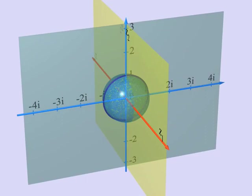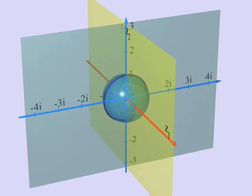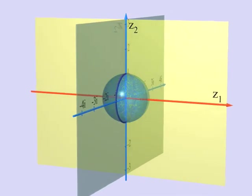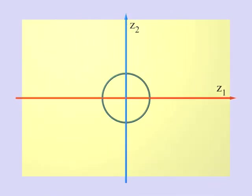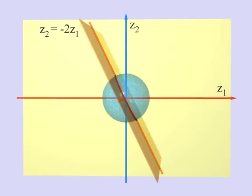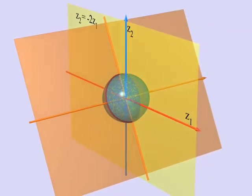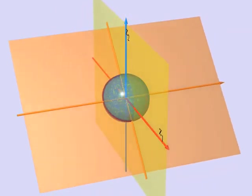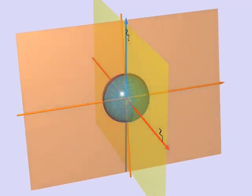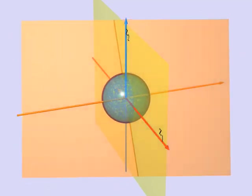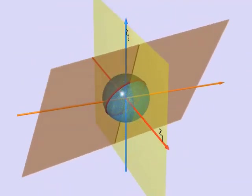Now what is true for the horizontal line and the vertical line is equally true for all lines going through the origin. Here you can see the line with equation Z2 equal to minus 2Z1. But we could do the same with any line Z2 equal to A times Z1 for any complex number A. In this manner, the three-sphere in four-dimensional space is filled with circles. One for each complex line going through the origin in our plane of complex dimension 2.